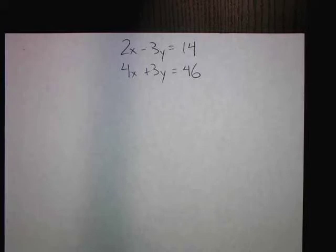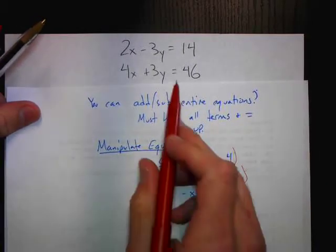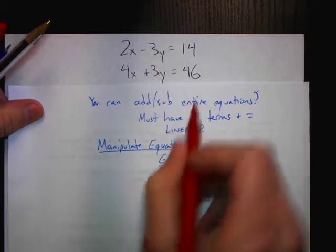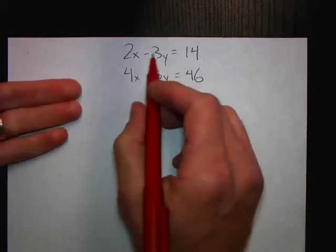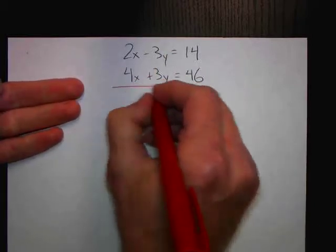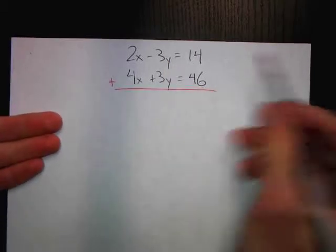If we could add these two equations, we could get rid of y and solve for x. That is within our power because remember the note — we can add entire equations as long as everything is lined up. The equal sign is lined up, the x's are lined up, the y's are lined up — everything is lined up. So we can add the entire equations, and we might get rid of a variable. That would be great.